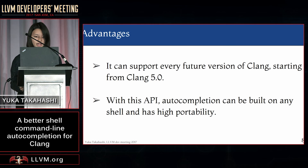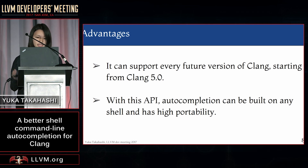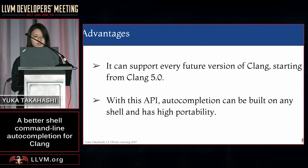With this API, you don't have to modify the autocompletion script when flags are added or descriptions or values are changed. So it can support every future version of Clang starting from Clang 5.0, and it is already available for use. We can also call this API from any shell, so it has high portability and can ship to any shell.